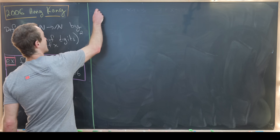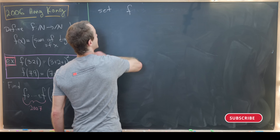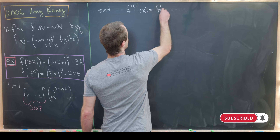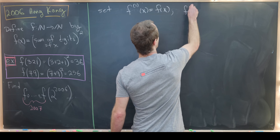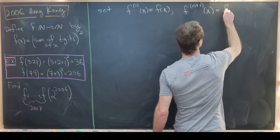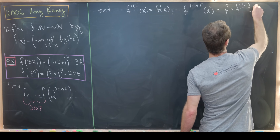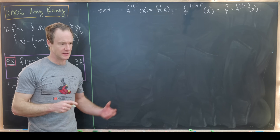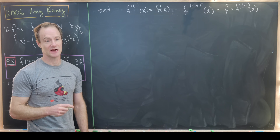Before we do that, let's build some notation. Let f upper 1 of x equal just f of x, and then define f upper n+1 of x equal to f composed with f upper n of x. So f upper n of x will be f composed with itself n times.